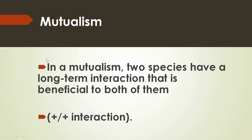Mutualism. In mutualism, two species have a long-term interaction — near lifelong — and it is an obligatory type of interaction that is beneficial to both species. This is a positive-positive interaction, meaning both species get benefitted.